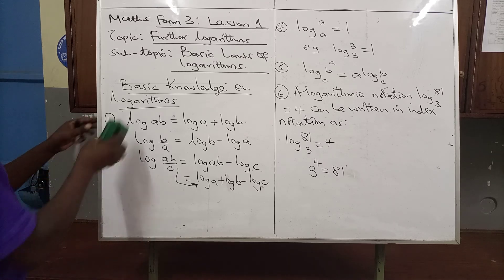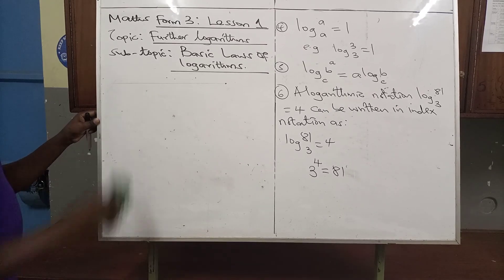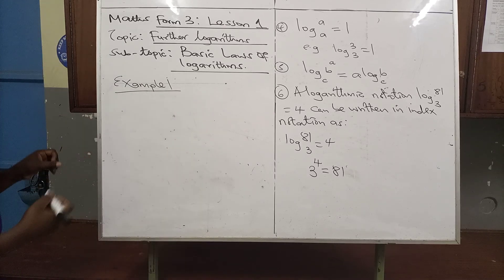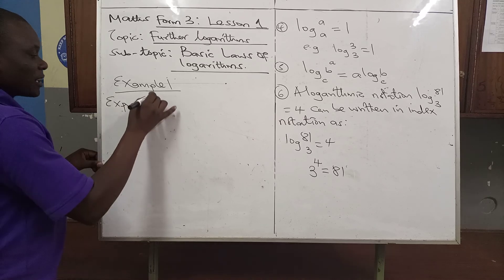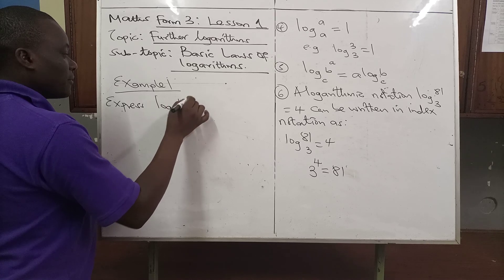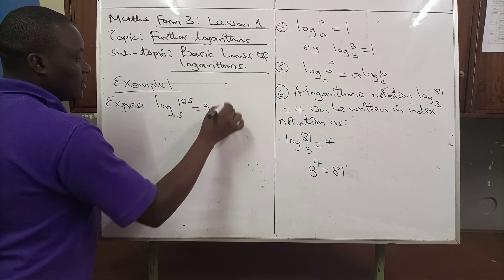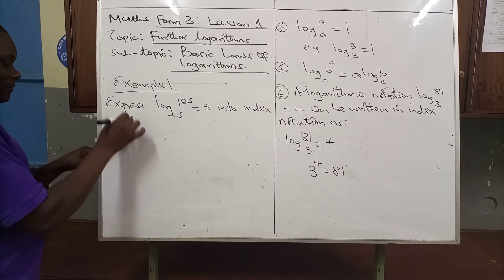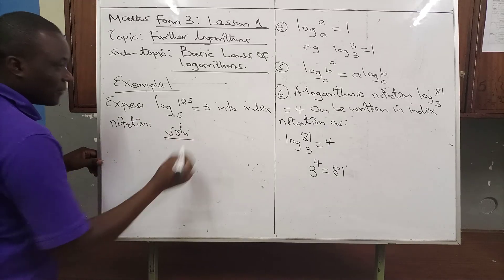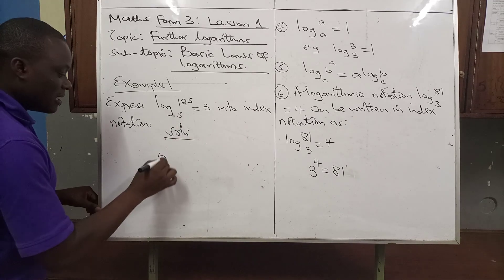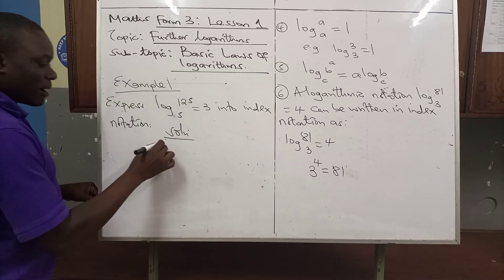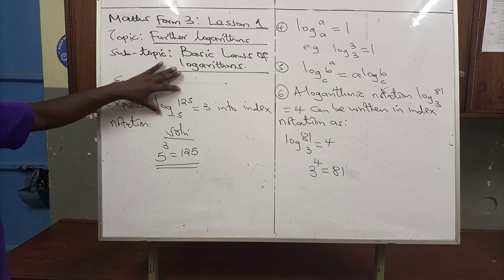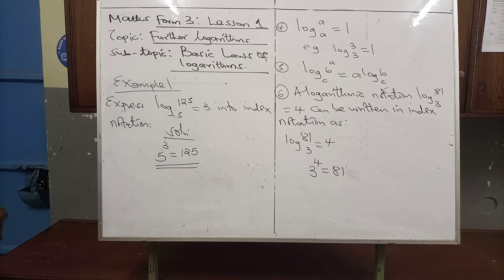Let us look at examples. Example 1: express log base 5 of 125 equals 3 into index notation. The base is 5, the base remains the base. The quotient 3 becomes the power, and the number 125 becomes the result. So the answer is 5 to the power 3 equals 125.